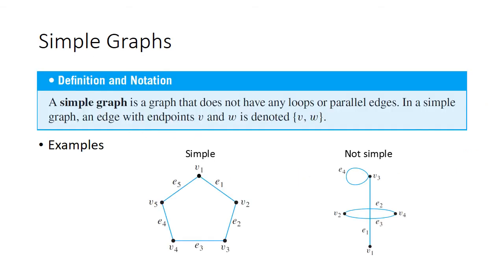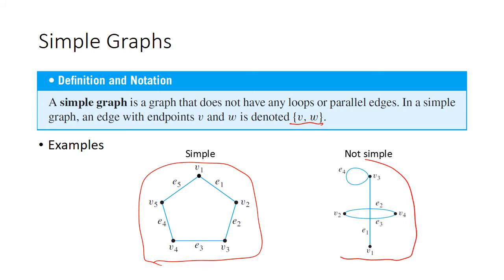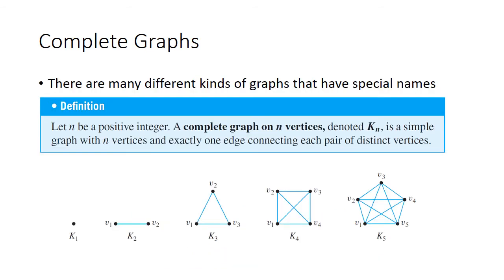A simple graph is just a regular graph with no loops and no parallel edges. In a simple graph, an edge with endpoints v and w is denoted with a regular set — not an ordered pair. For example, one graph shown is a simple graph with no loops or parallel edges, while another is not simple because it has both a loop and a parallel edge.